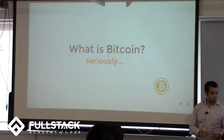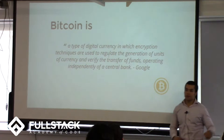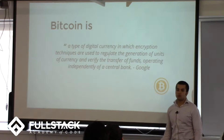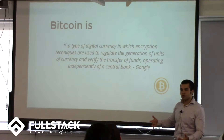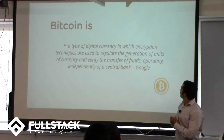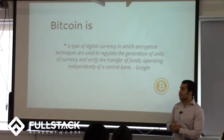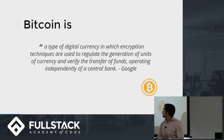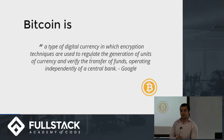What is Bitcoin? First thing you do whenever you want to know about something is you Google it. This is what Google says: it's a type of digital currency in which encryption techniques are used to regulate the generation of units of currency and verify the transfer of funds, operating independently of a central bank.